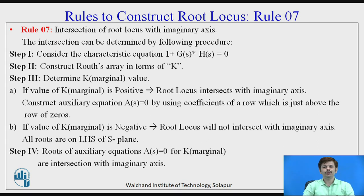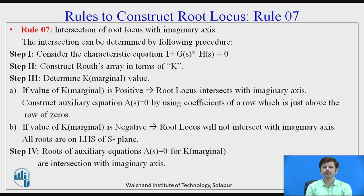Rule number seven tells us the intersection of root locus with the imaginary axis, and for that we have four steps. In step one, we construct the characteristic equation, that is 1 + G(s)H(s) = 0, from the given open loop transfer function. In step two, we construct the Routh array in terms of K. In step three, we determine the K marginal value. If K marginal is positive, the root locus intersects the imaginary axis and we find the auxiliary equation from the row immediately above the term involving K. If K marginal is negative, the root locus does not intersect the imaginary axis.